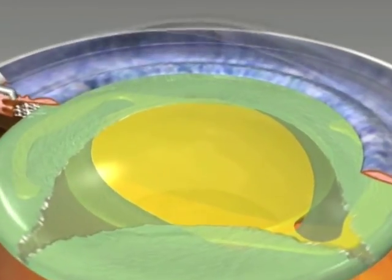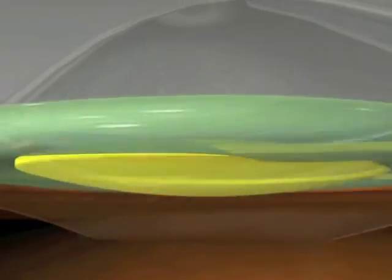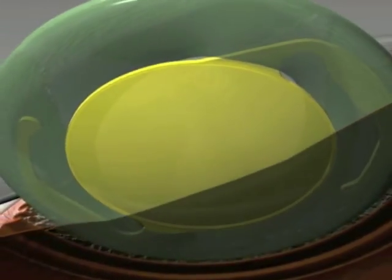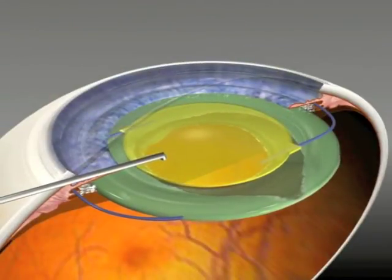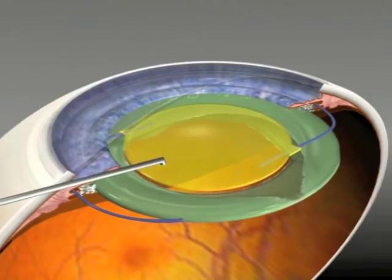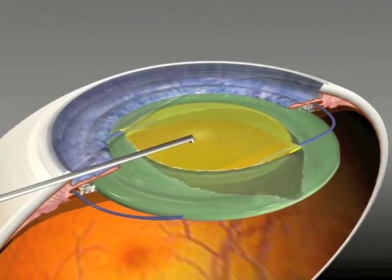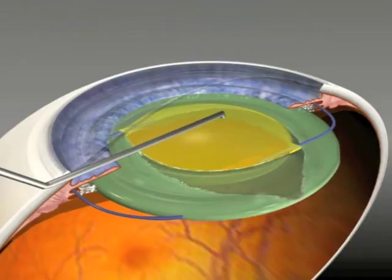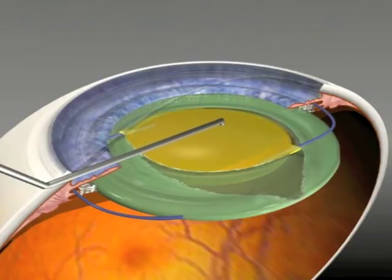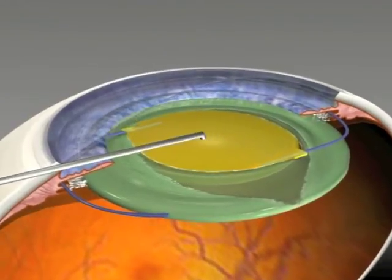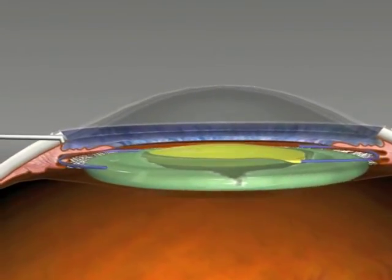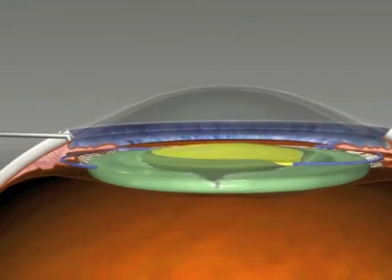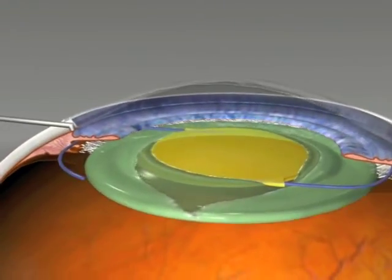If a large anterior capsule tear is present making in-bag fixation unsafe, especially with a three-piece lens, a posterior capsule rexus of the appropriate size can be made and the lens put in the sulcus, the optic pushed through that anterior capsule opening and then through the posterior capsule for capsule fixation and certain centration and fixation.